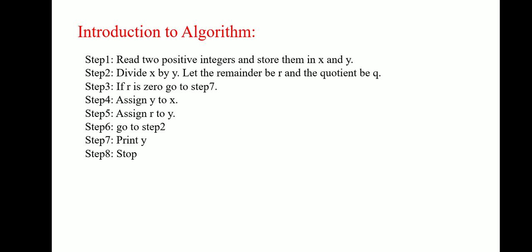If R is 0, go to Step 7. R is 0 means if remainder is 0, then directly print the Y output and stop. But else, if R is not 0, then Step 4 is assign Y to X, Step 5 is assign R to Y and go to Step 2. So repeat the same process. This is the algorithm for finding greatest common divisor.